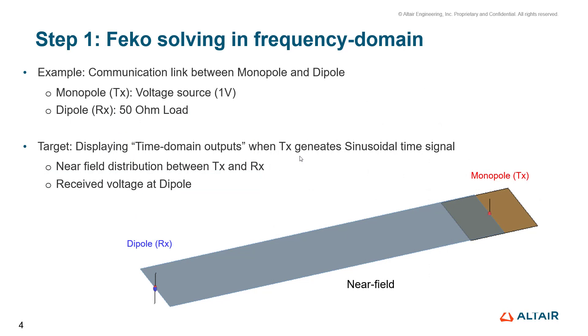With this FEKO example, I'd like to show how to set up FEKO for time signal output. As I mentioned before, the first step is FEKO solving in frequency domain. This example is for a communication link between monopole and dipole.